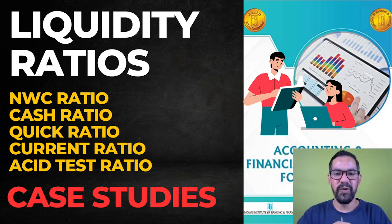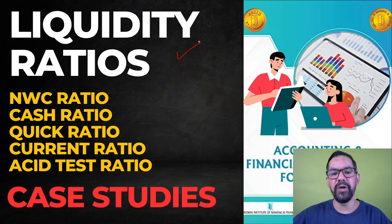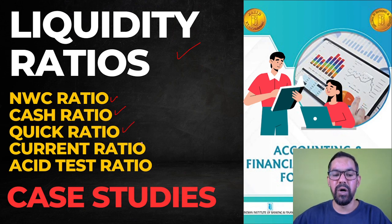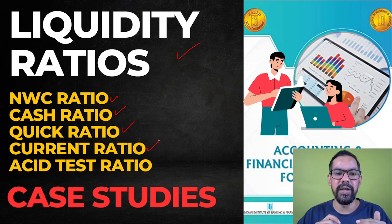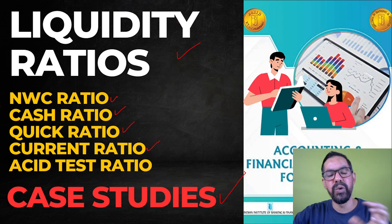Hey guys, welcome back, hope you all are doing well. In this video we will continue with the ratio analysis. Today we will discuss liquidity ratios. The major ratios under liquidity ratio are net working capital ratio, cash ratio, quick ratio (also called acid test ratio), and current ratio. With the help of some cases we will understand these particular ratios, and I'll give you some examples so you can practice.